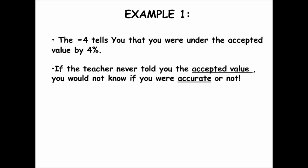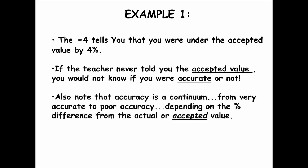If you don't hit that bullseye, you're not accurate. If you hit the center of the bullseye, you would be 100% accurate. The further you are from the bullseye, the less accurate you are — similarly, the further you are from the accepted value, the less accurate you are. If you're under the accepted value, it's negative; if you're over, it's positive. Accuracy is a continuum, meaning it ranges from very accurate to poor accuracy depending on the percent difference from the accepted value.